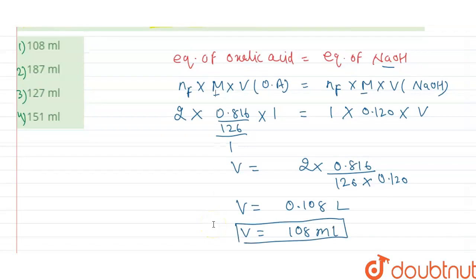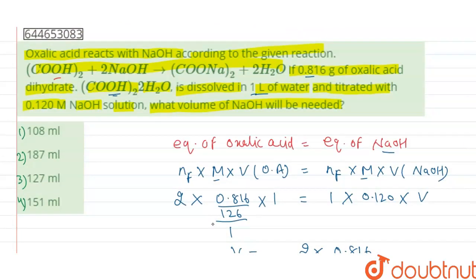So this is the required volume of NaOH which neutralizes the oxalic acid solution. So only option number 1 is correct, and all other options are incorrect. I hope you understand. Thank you.